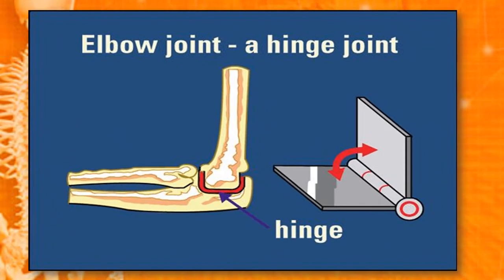Hinge joint. Such joints are present in the knees, elbows, fingers and toes. A hinge joint is like the hinges in a door — it enables movement similar to the opening and closing of a hinged door.